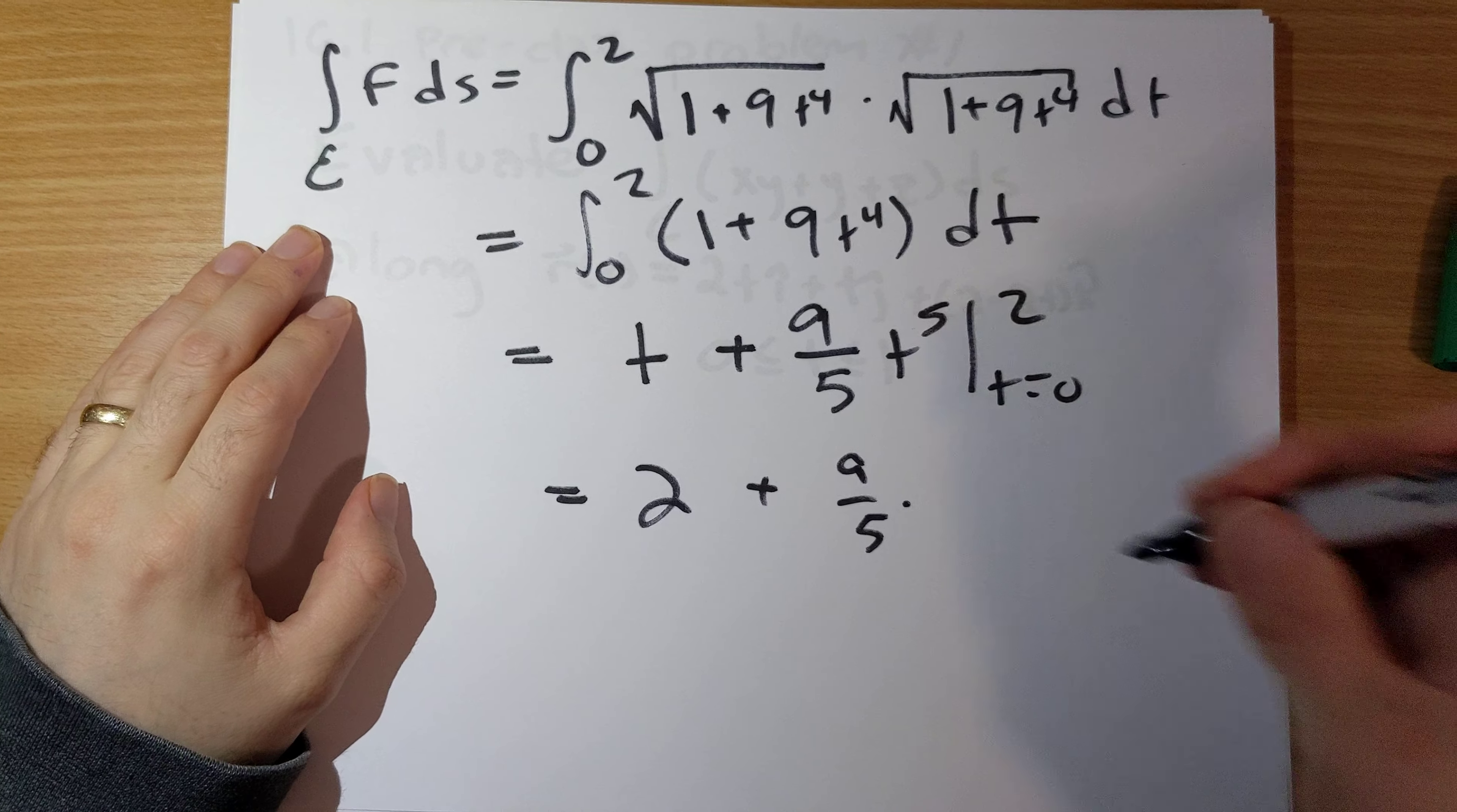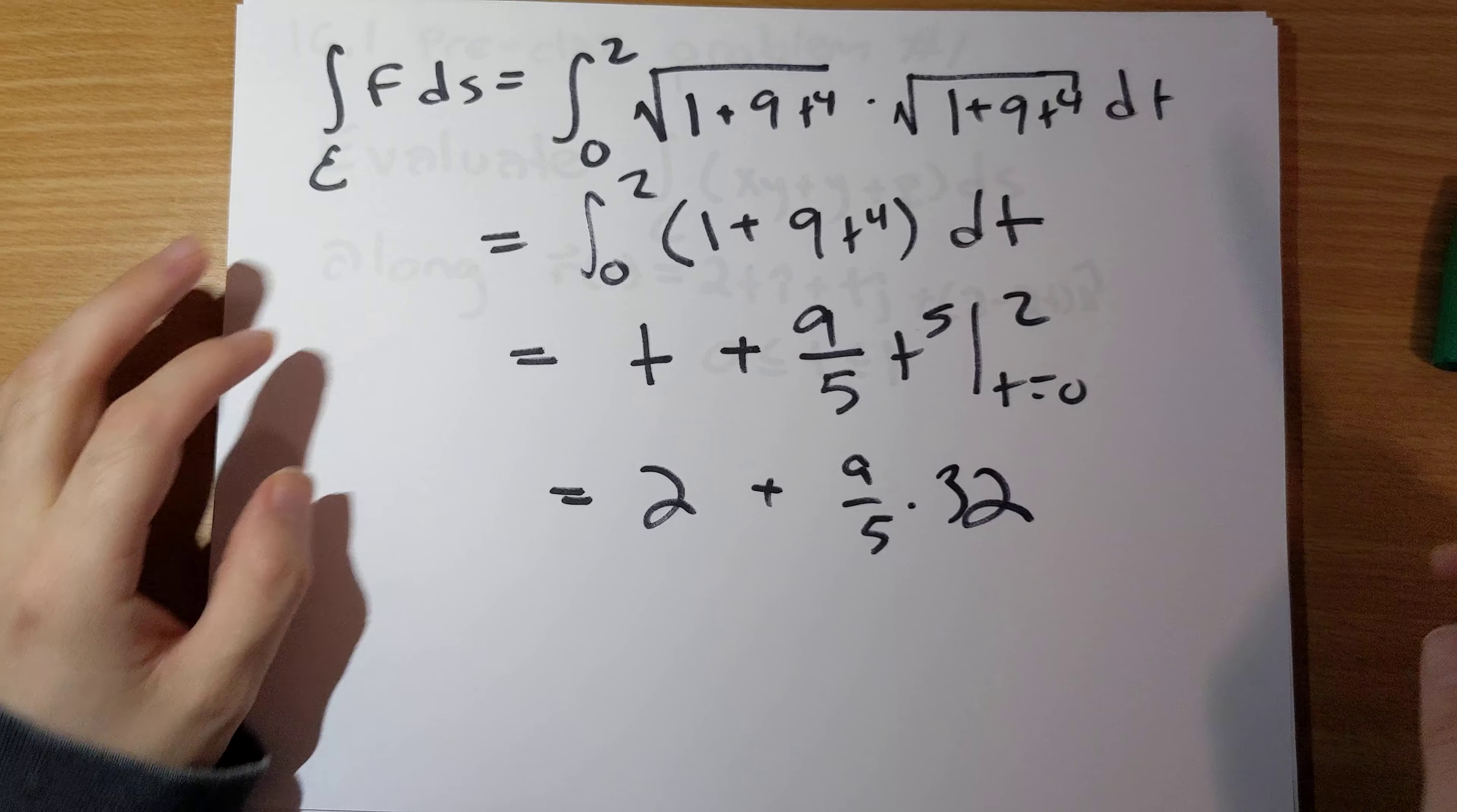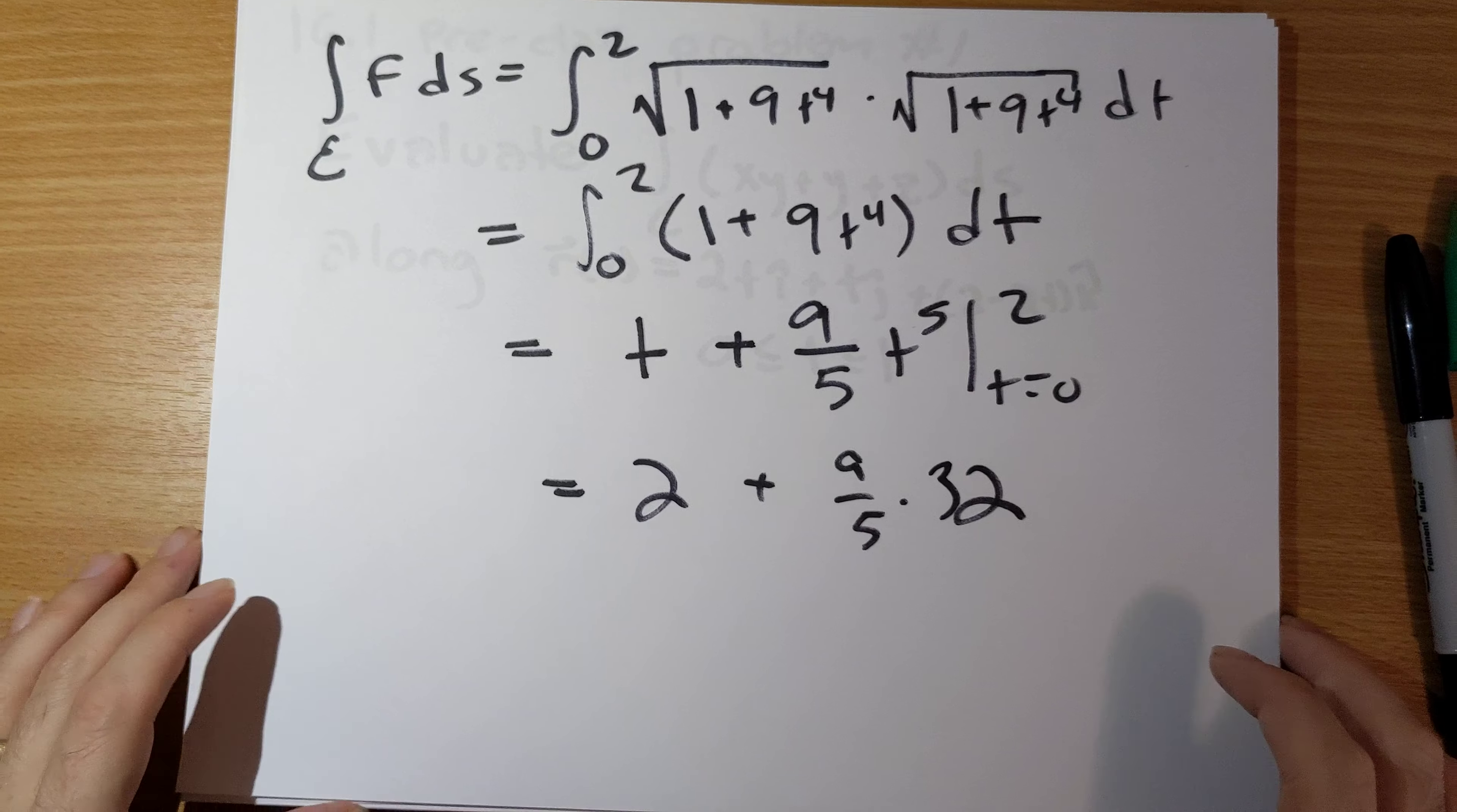And so this becomes a very easy integral to evaluate here. And so we end up with 2 plus 9 fifths times 32.